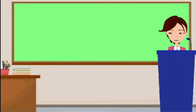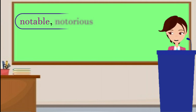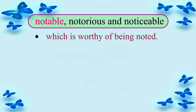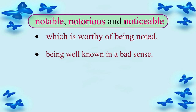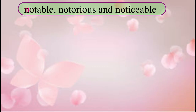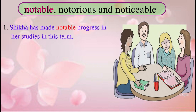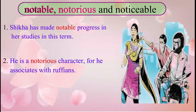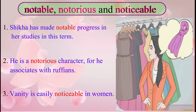Let us have a look at another set of words: notable, notorious, and noticeable. Notable means that which is worthy of being noted. Notorious means being well known in a bad sense. Noticeable means that which can be seen or observed in a prominent way. For example: Shikha has made notable progress in her studies this term. He is a notorious character, for he associates with ruffians. And for noticeable: vanity is easily noticeable in women.